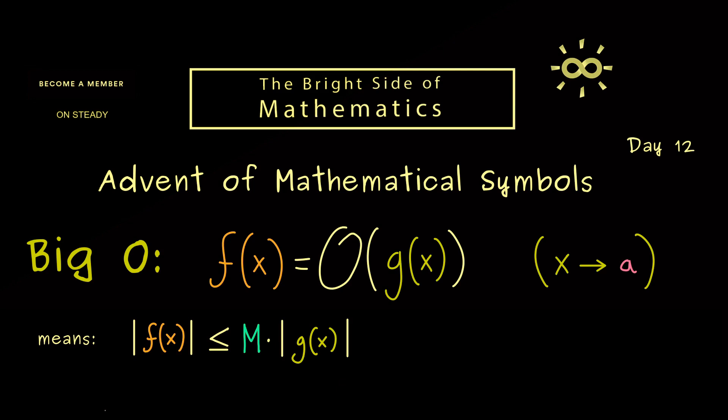Now if you don't like this constant M we can also rewrite the whole thing with a limit superior. So we have lim sup where x goes to the point a, and then we take the absolute value of f divided by g.